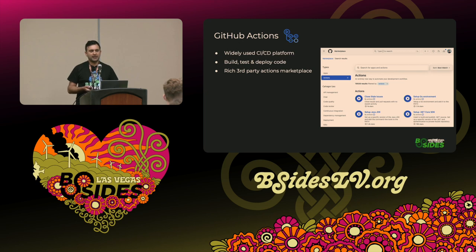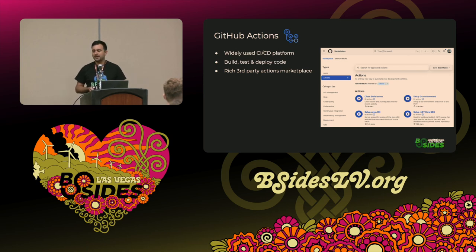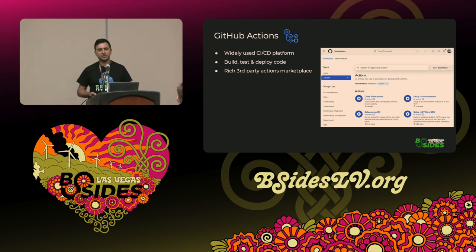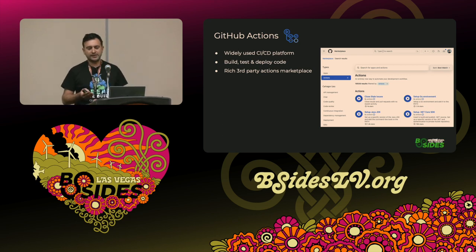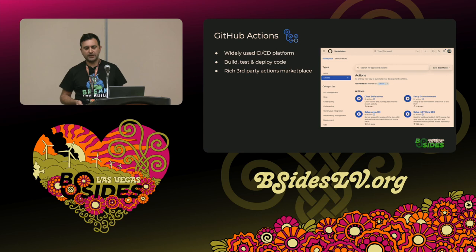GitHub Actions is a very popular CI/CD platform by GitHub which allows you to build, test, and deploy your code automatically, and it has a very rich and extensive third-party action marketplace. You can think of an action as a software package — instead of developing the logic inside your workflow, you can simply use the action from the marketplace. Most of the actions are developed by the community and not by GitHub, and everyone can basically write the code and post it as an action in the marketplace.